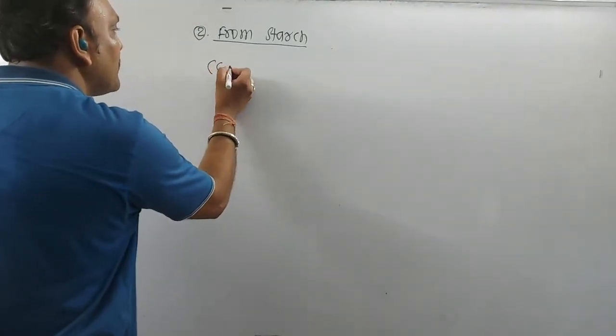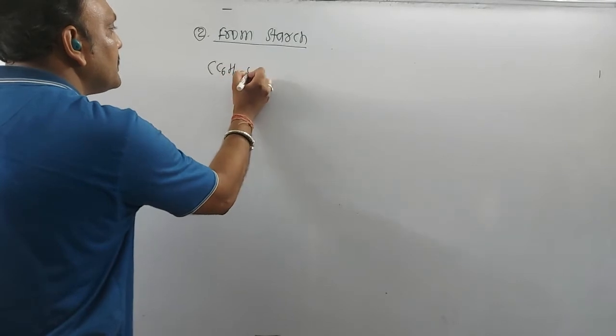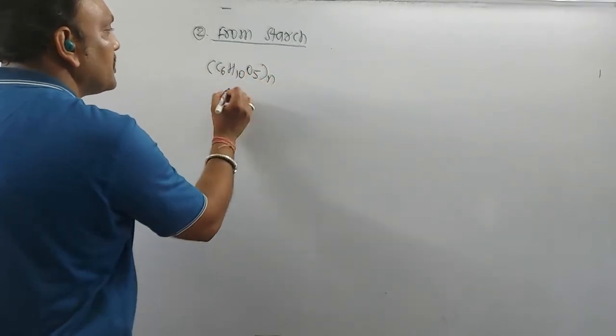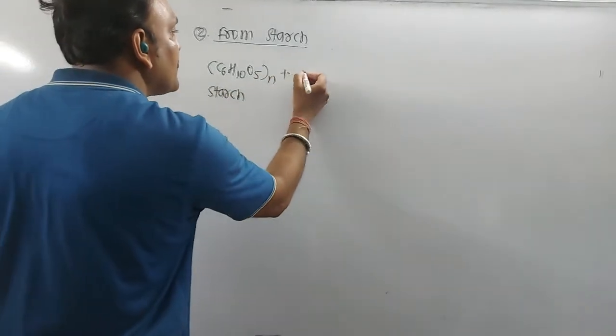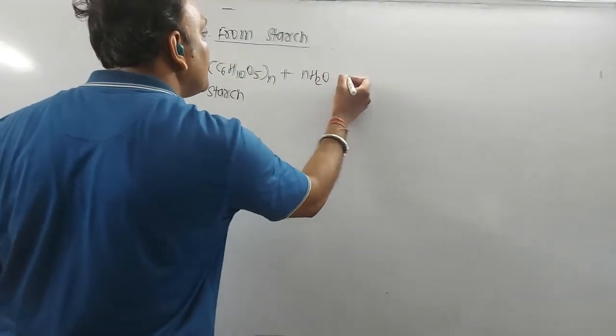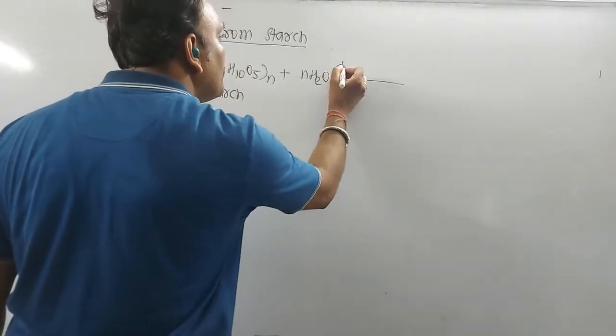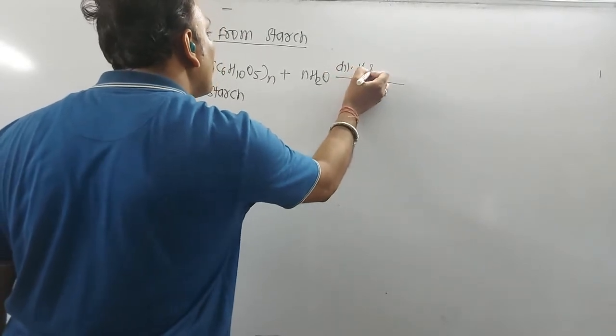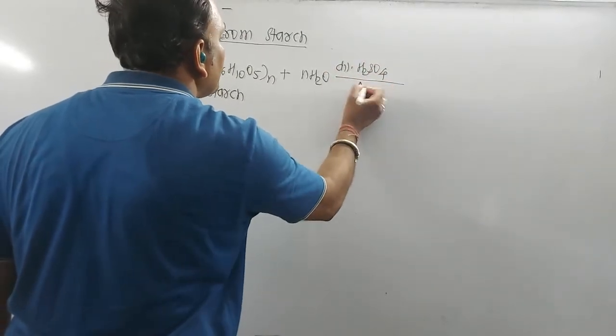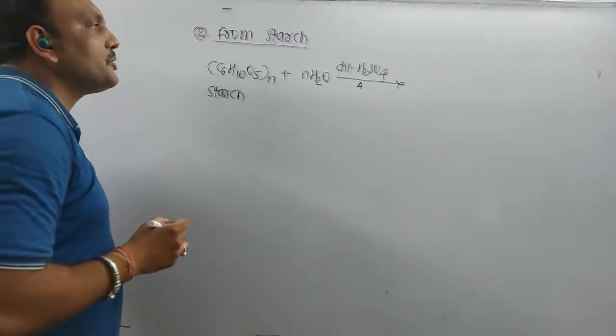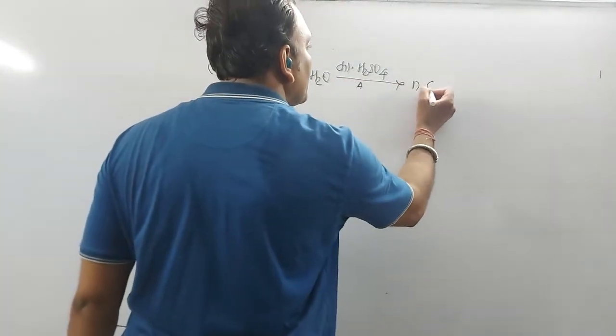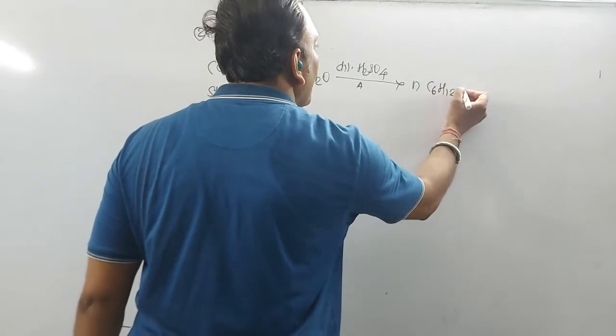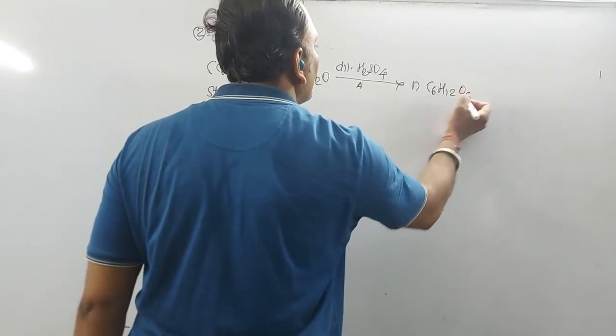So remember, starch can be given in this manner. So this is the starch, and remember it is a polymer, we all know very well. So when starch is hydrolyzed by using dilute mineral acid like H2SO4, then upon hydrolysis it would give large number of glucose molecules. I mean, glucose in bulk can be produced in this manner.